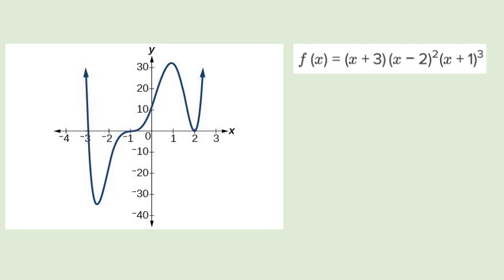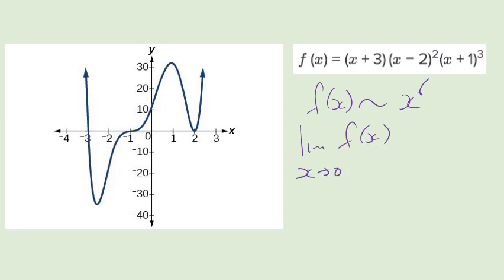Look at this beautiful function. That goes like x squared, and that goes like x cubed, so this is a sixth-order polynomial — f of x goes like x to the power 6. I want to know the limit of f of x as x tends to 0. Direct substitution: all the x terms go to 0, so we're left with minus 2 squared, which is 4; times 3 is 12. The limit of f of x is 12.